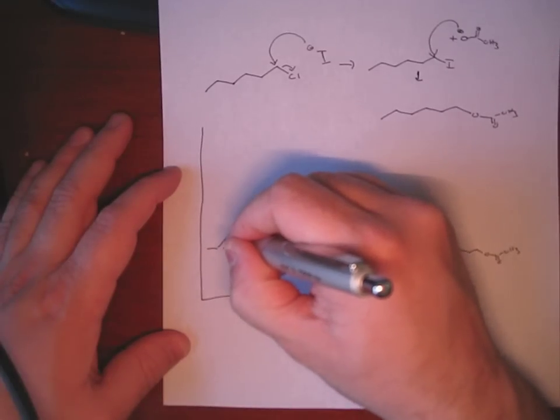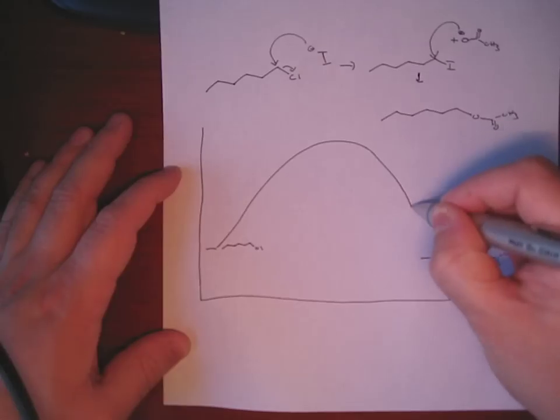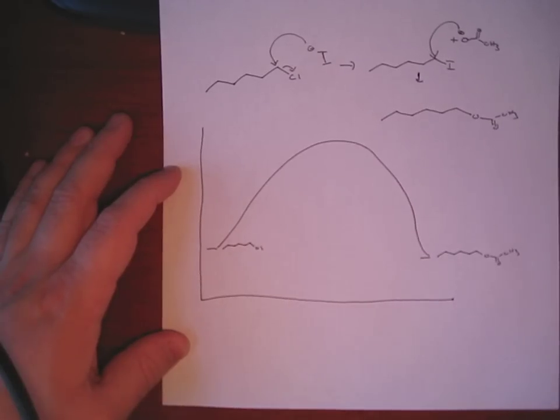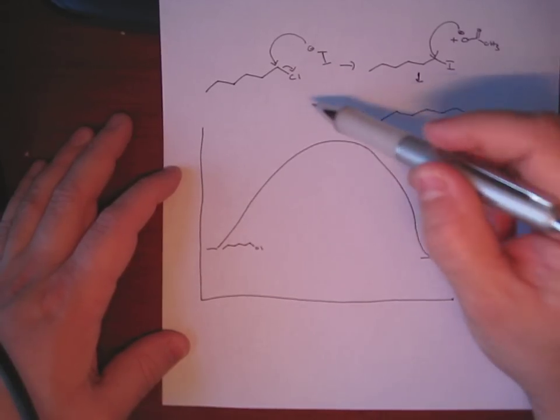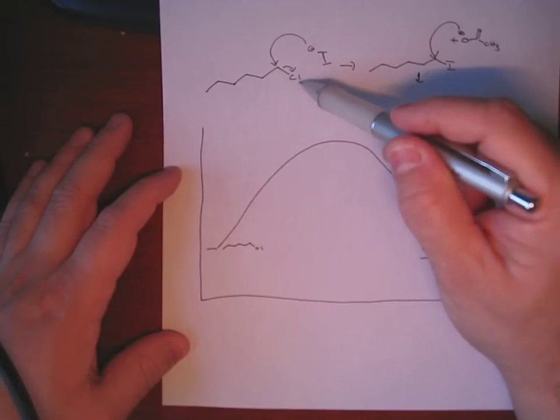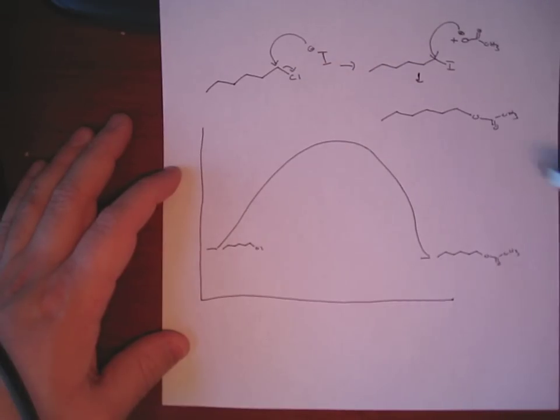So the standard SN2 reaction would be this, where the transition state would be for the uncatalyzed reaction, carbon-chlorine bond breaking, and then the carbon-oxygen bond forming.